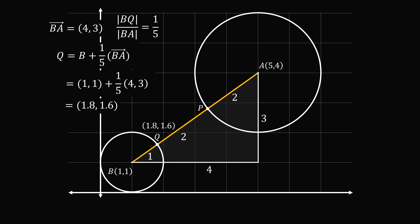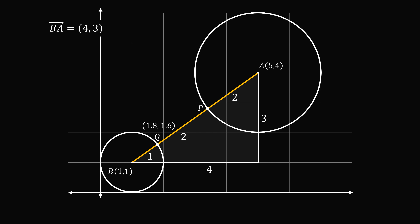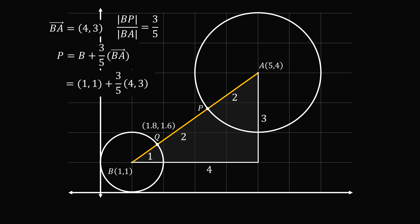We do the same to find point P. Starting from point B and adding a proportion of vector BA — since BP has length 3 out of 5, we add three-fifths of the vector. Point P equals B plus three-fifths of BA: substituting in these values and simplifying, we get P at coordinates (3.4, 2.8).